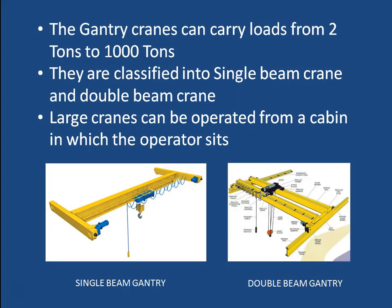The gantry crane runs on rails supported on steel columns. The rails can directly rest on the column or on a cantilever bracket connected to the steel column. Gantry cranes can be very light or very heavy duty, carrying loads from 2 tons to even 1000 tons. They are classified into single beam crane and double beam crane. The single beam carries load through one beam via wheels to the rails, while the double beam gantry carries much heavier loads.